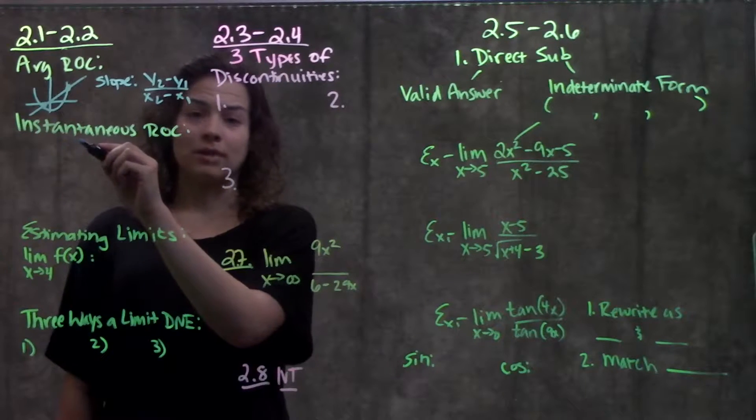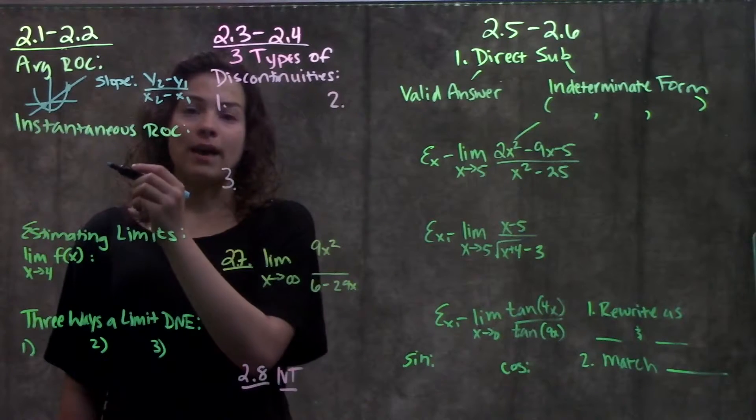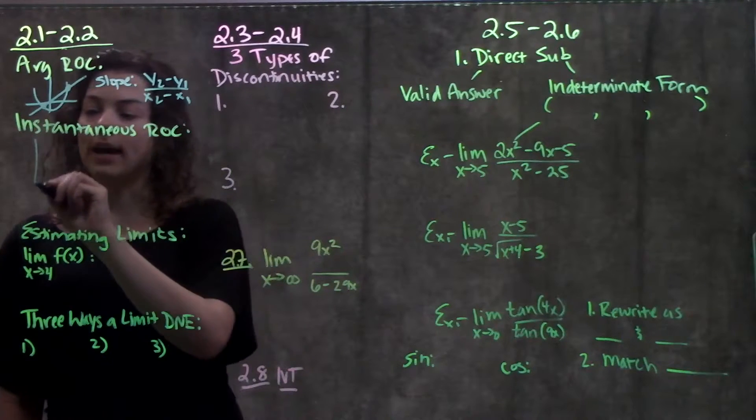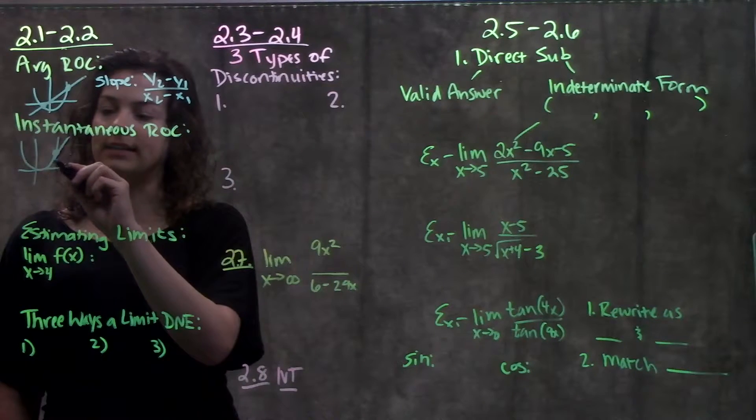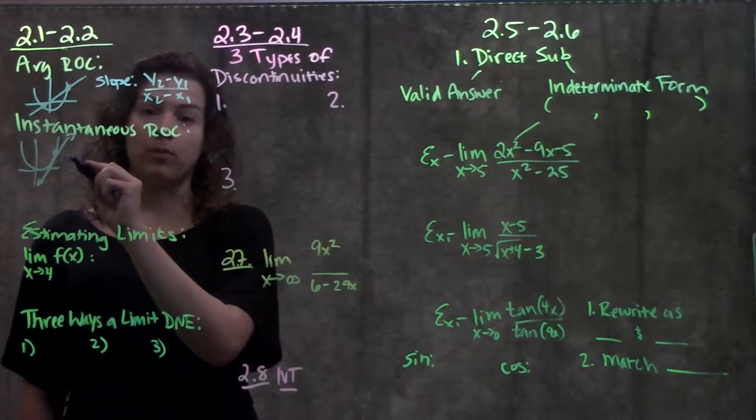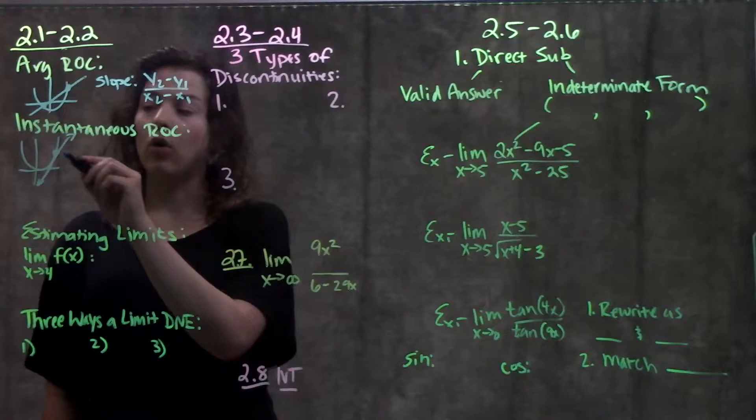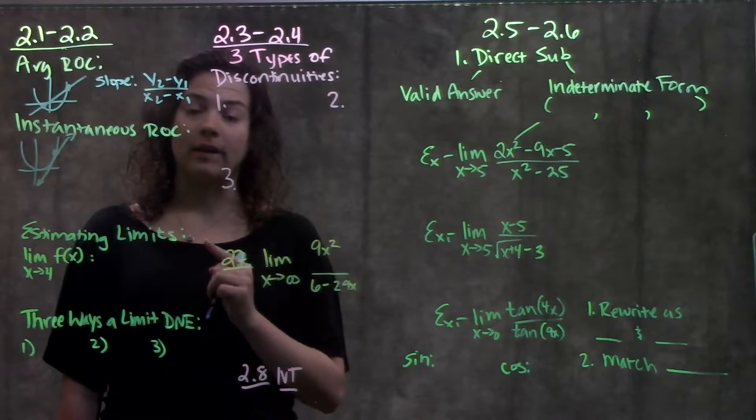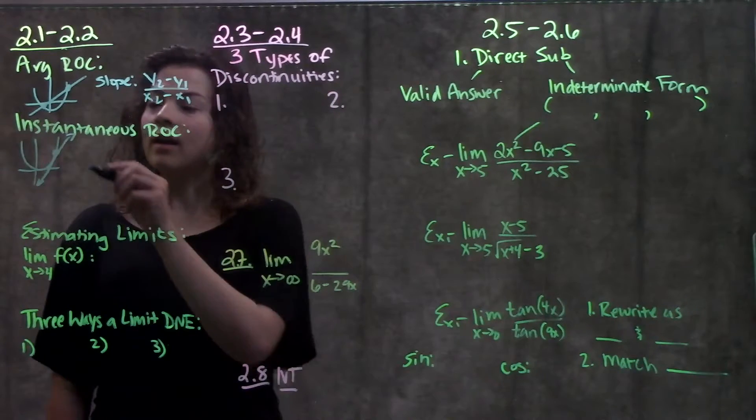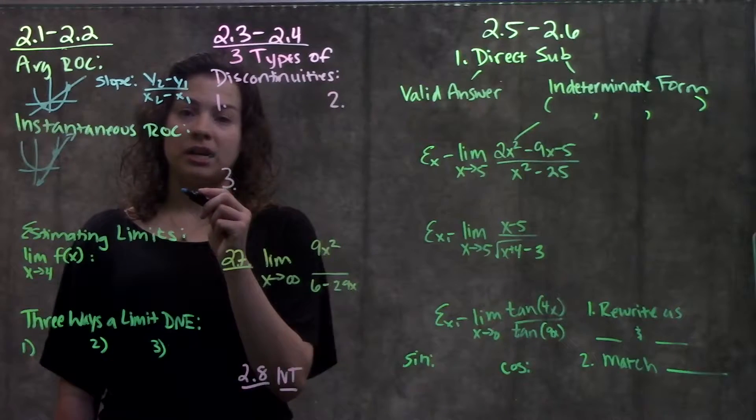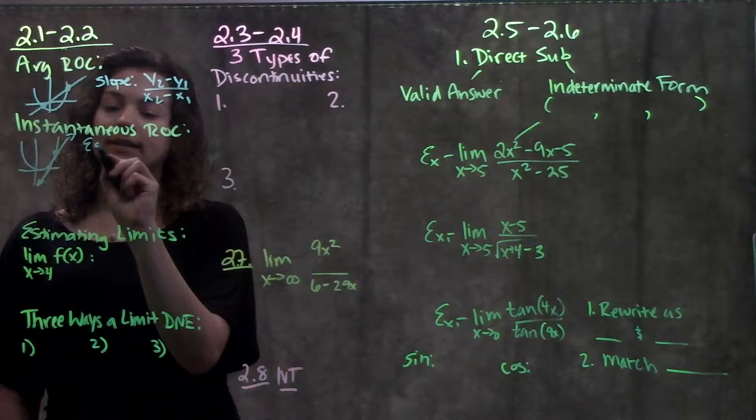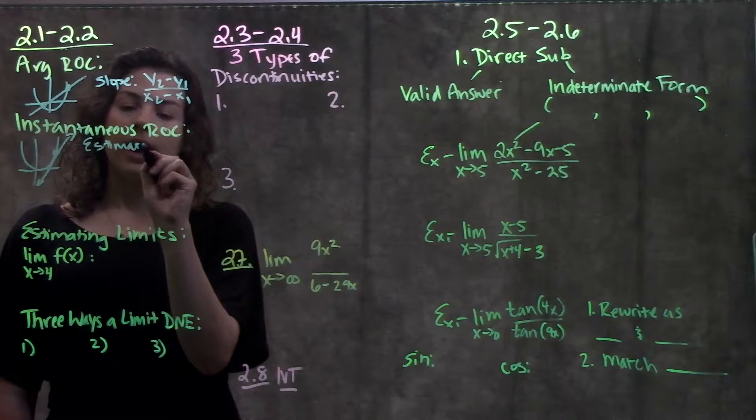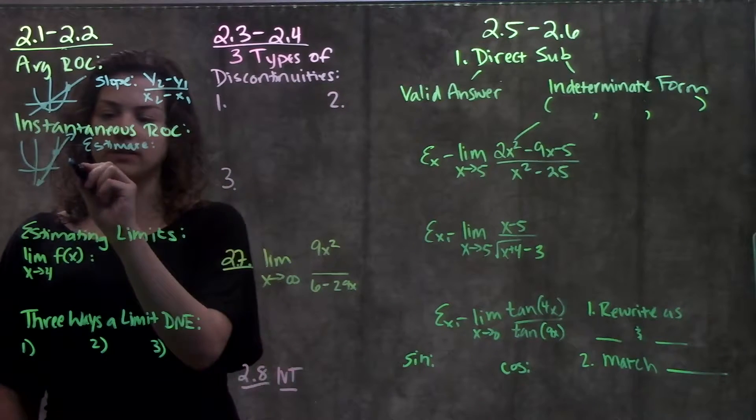The new thing that we learned in this section was instantaneous rate of change. What that looks like on a graph is you have this function, and instantaneous rate of change is that tangent line at a specific point. Remember, the tangent line only touches this function at exactly one point. The way we calculate instantaneous rate of change, well, we don't know how to calculate it directly yet, so we had to estimate it.